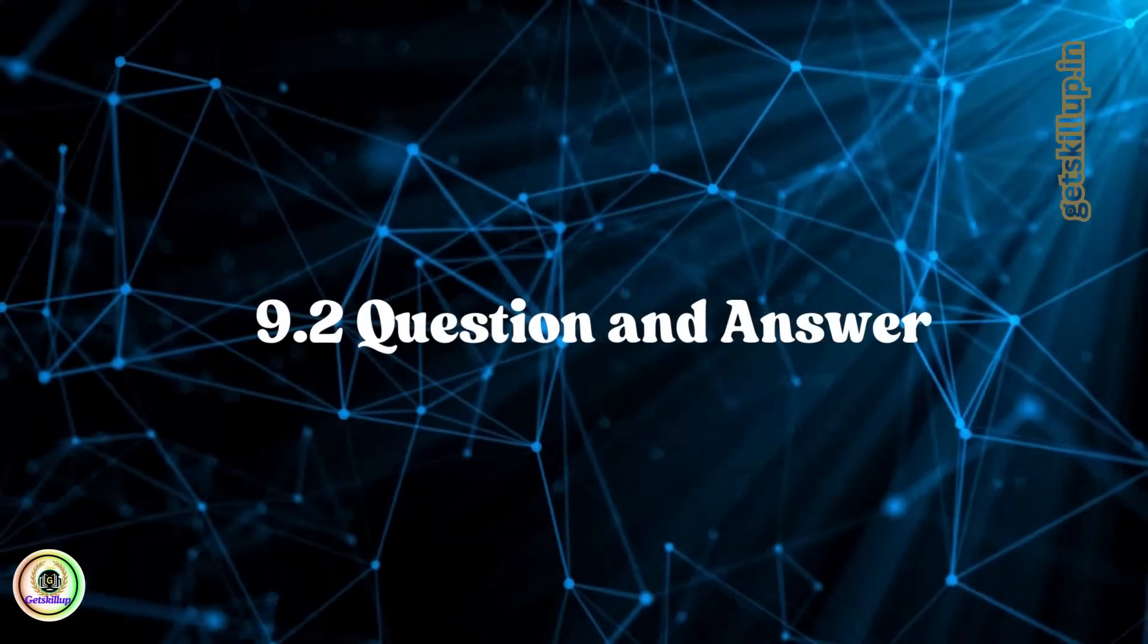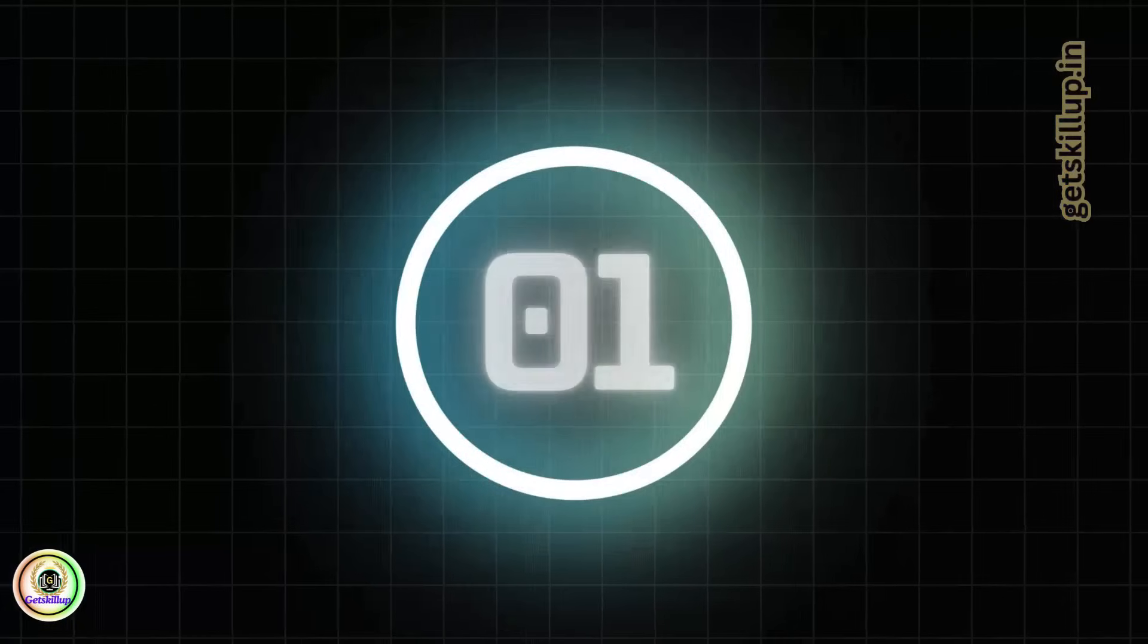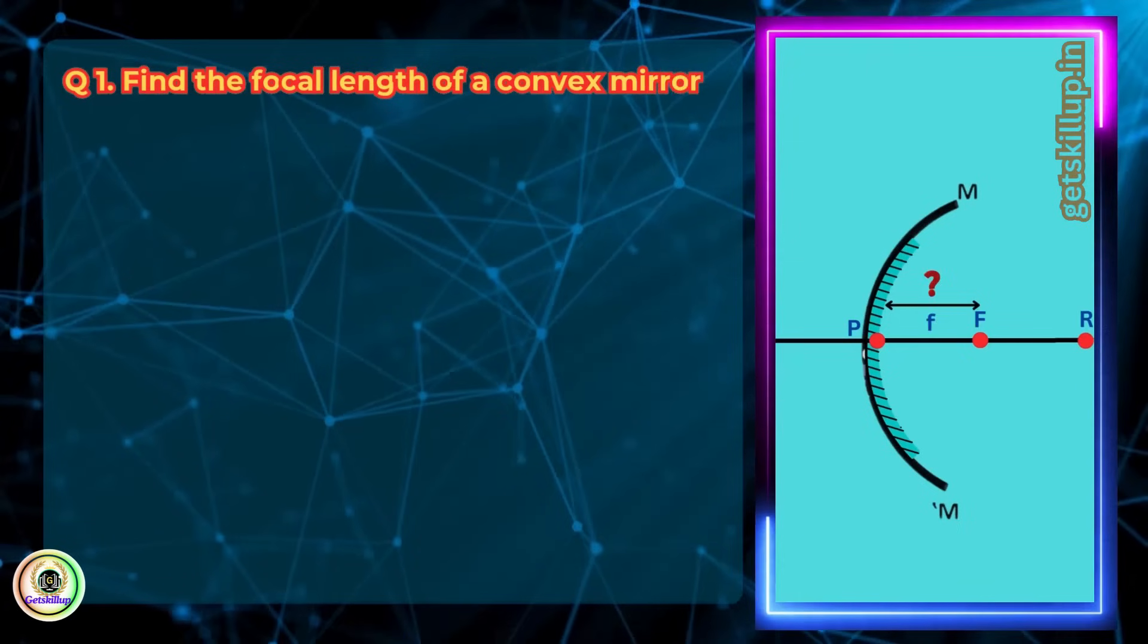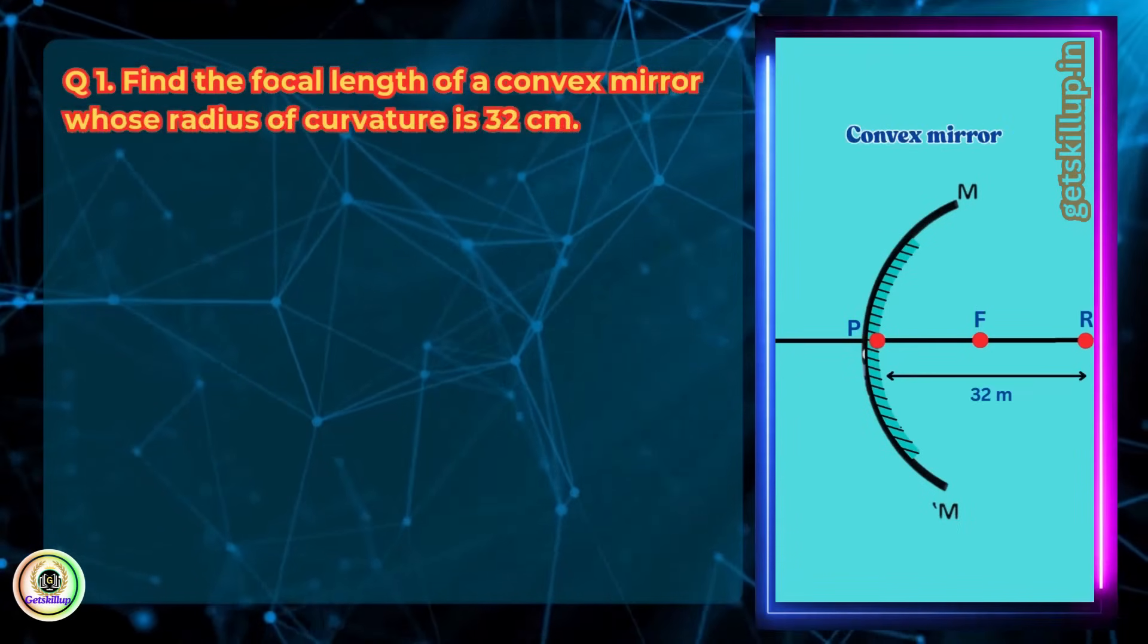Question and answer 9.2. Question 1. Find the focal length of a convex mirror whose radius of curvature is 32 cm.